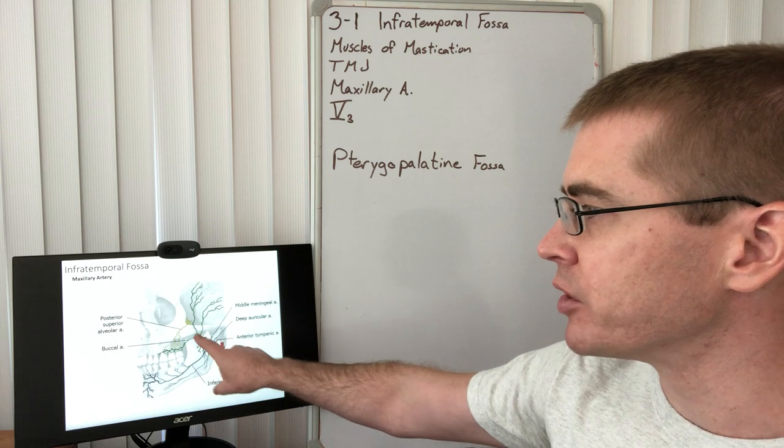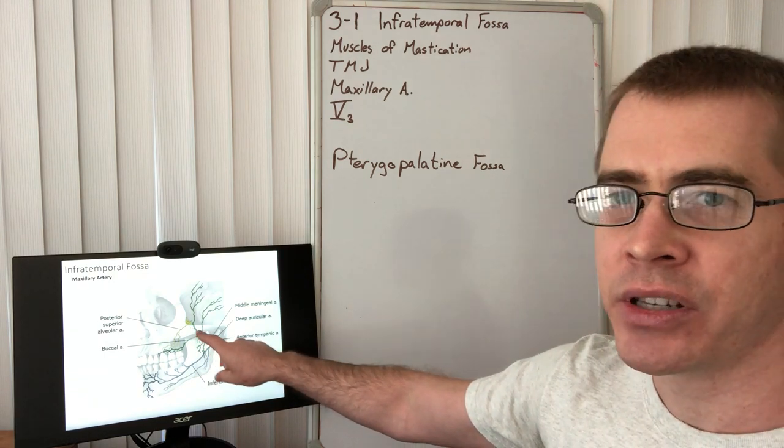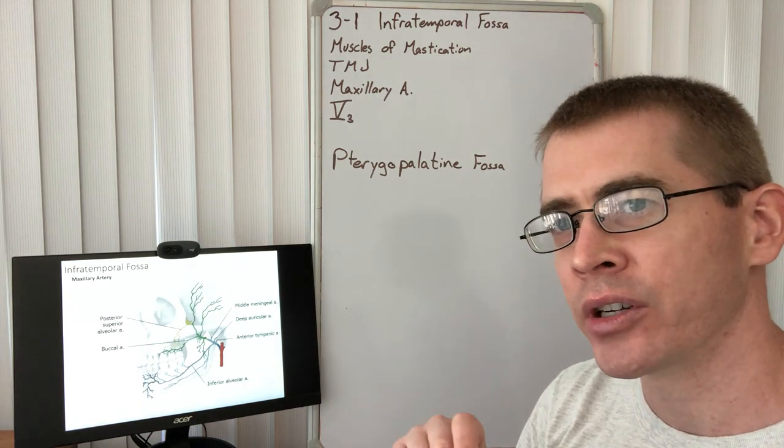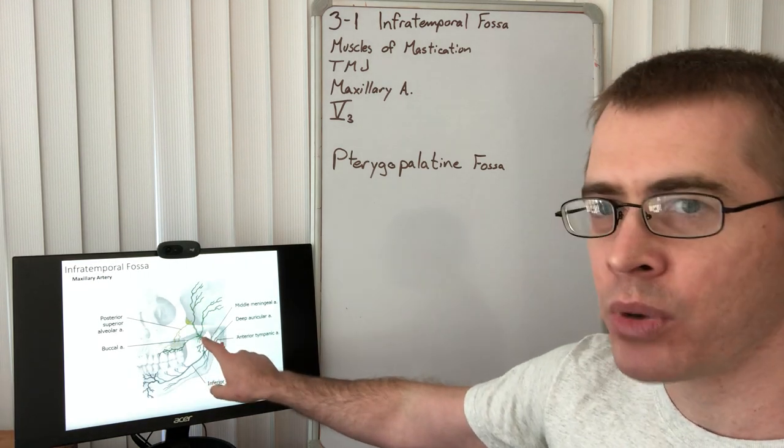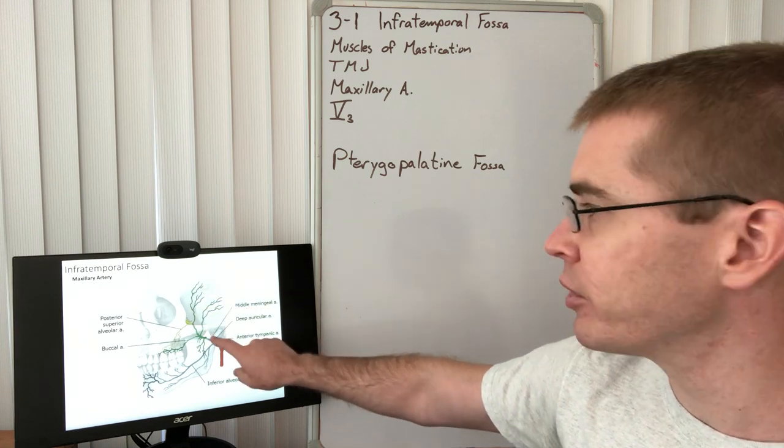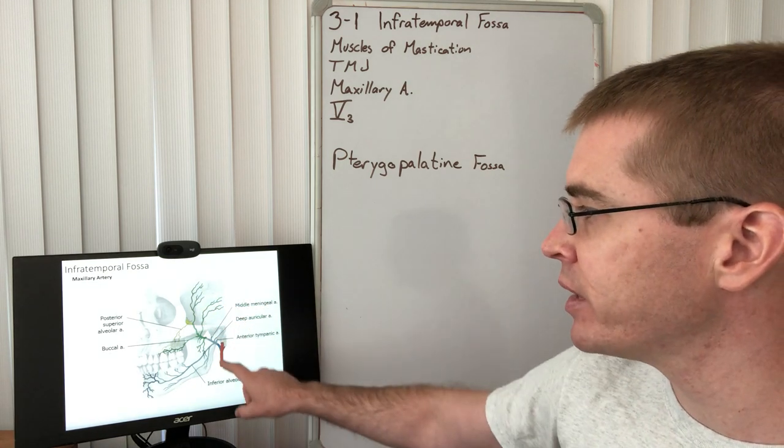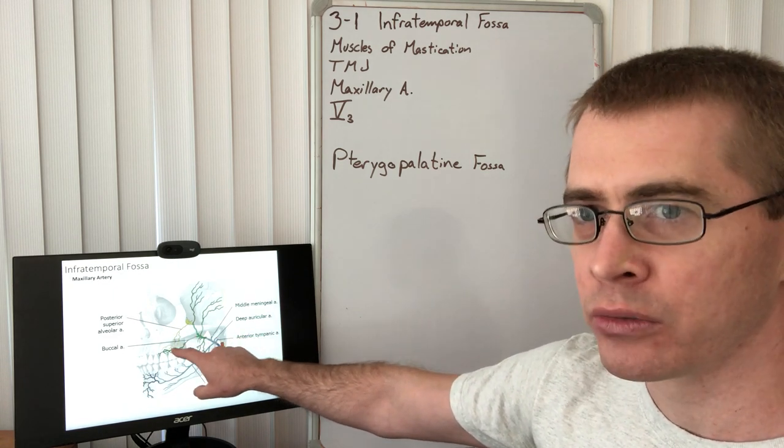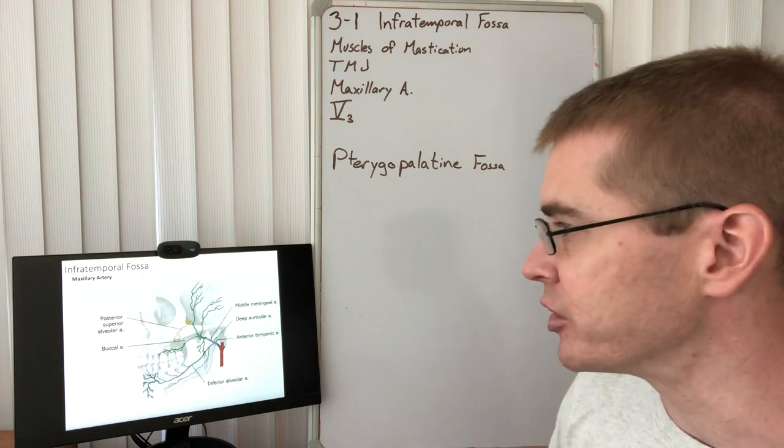Then this middle section is basically the muscular branch. Most of the muscular portions of maxillary artery come off of this middle portion. You can see arteries supplying temporalis, there are two portions of it there, to masseter, to the pterygoids, and to the buccal region of the face, the cheek.